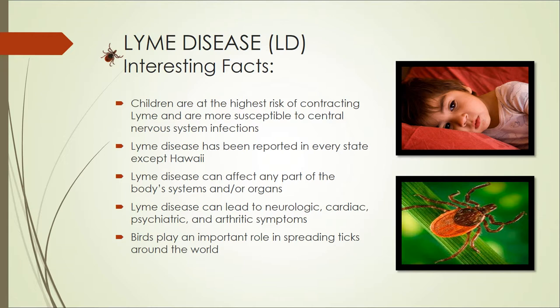Lyme disease can affect any part of the body system and its organs. Lyme disease can lead to neurological, cardiac, psychiatric, and arthritis symptoms. Birds play an important role in spreading ticks around the world.